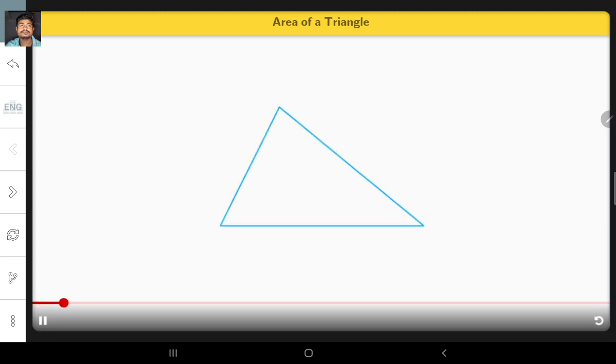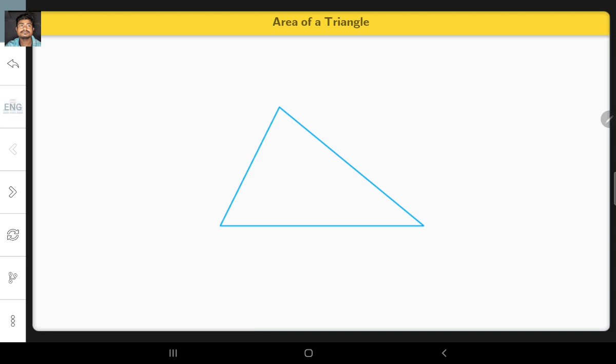The space inside the boundaries of the three sides of a triangle is known as the area of the triangle. The area of a triangle is calculated as half into base into height and is measured in square units.